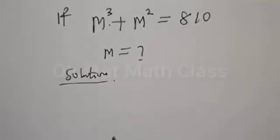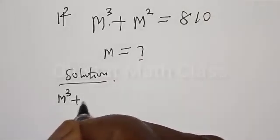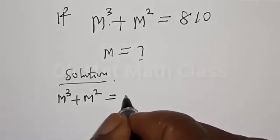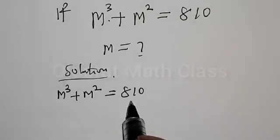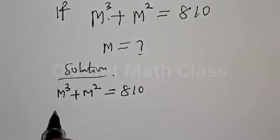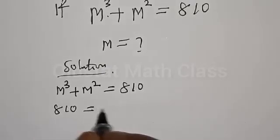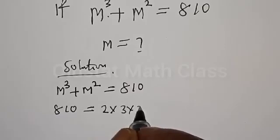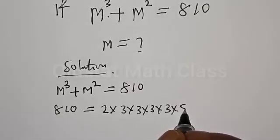Solution. We have M³ plus M² is equal to 810. We want to express 810 in the form of M³ plus M². This implies that 810 is equal to 2 multiplied by 3 multiplied by 3 multiplied by 3 multiplied by 3 multiplied by 5.